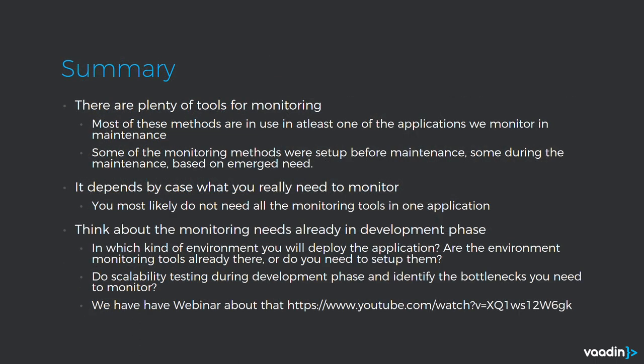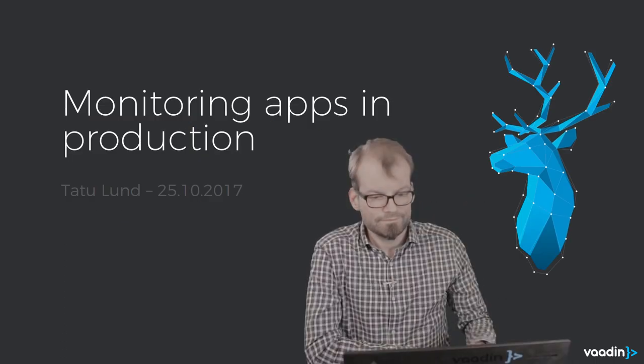In summary, there are plenty of tools for monitoring, and most of the methods I've discussed we have used in the applications we currently monitor — of course not all in the same application. You need to think a bit ahead, and sometimes during the maintenance period there's an emerging need to add monitoring methods. One thing I strongly recommend is to do scalability testing already in the development phase, because you cannot do scalability testing in production. That helps identify potential bottlenecks and weak points, and helps you find the places that especially need to be monitored. We have some webinars recorded about how to do scalability testing. Thank you!